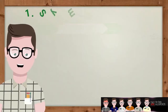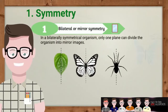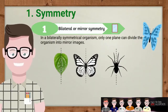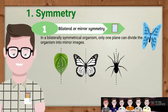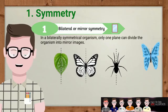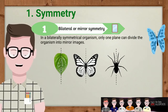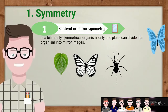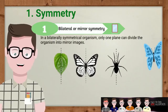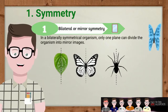The first pattern in nature is symmetry, which is general in all living organisms. Animals may have bilateral or mirror symmetry, as do the lips of plants. The butterfly is symmetric about the axis indicated by a line — the left and right portions are exactly the same. This type of symmetry is called bilateral symmetry. In a bilaterally symmetrical organism, only one plane can divide the organism into mirror images.